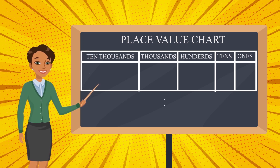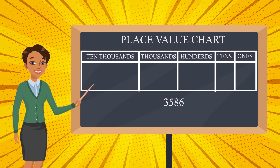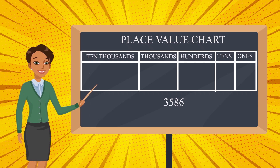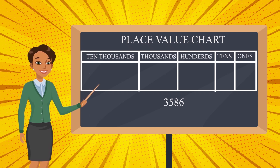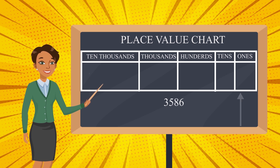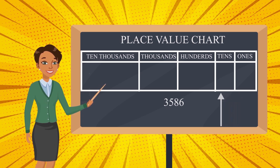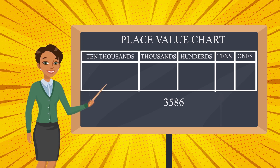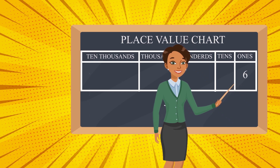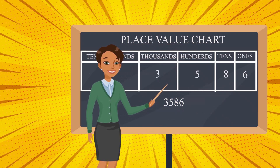Now let's take the number 3586. Shall we arrange the number 3586 in the place value chart? To arrange the numbers, from where do we start? We should start from ones and then move towards the left side. So we have six here, then eight, five, and three.